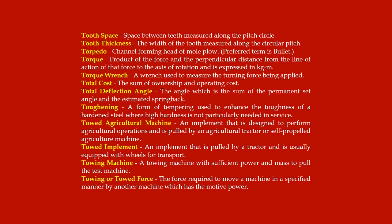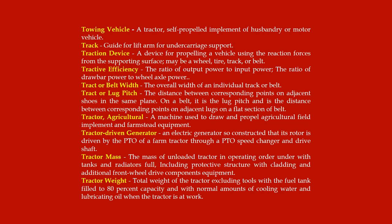Towed implement: an implement that is pulled by a tractor and is usually equipped with wheels for transport. Towing machine: a machine with sufficient power and mass to pull the test machine. Towing or towed force: the force required to move a machine in a specified manner by another machine which has the motive power. Towing vehicle: a tractor, self-propelled implement of husbandry, or motor vehicle. Track guide for lift arm: for undercarriage support.